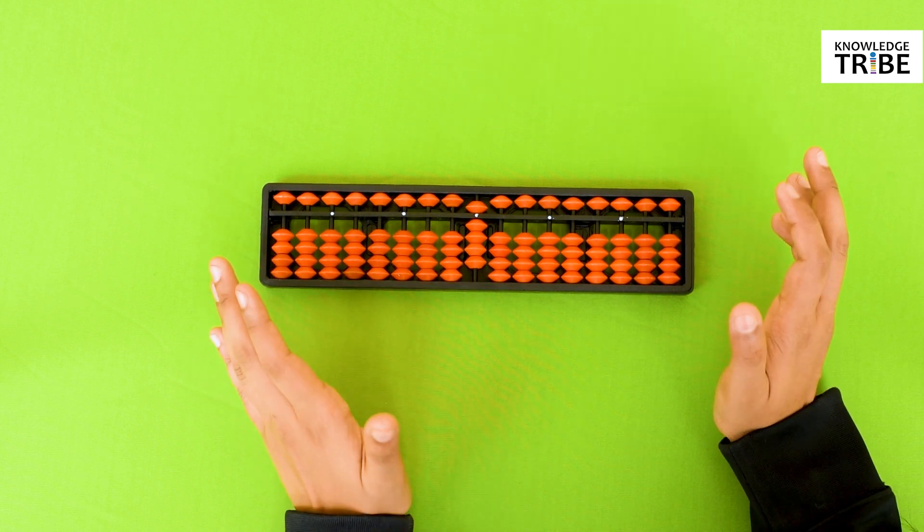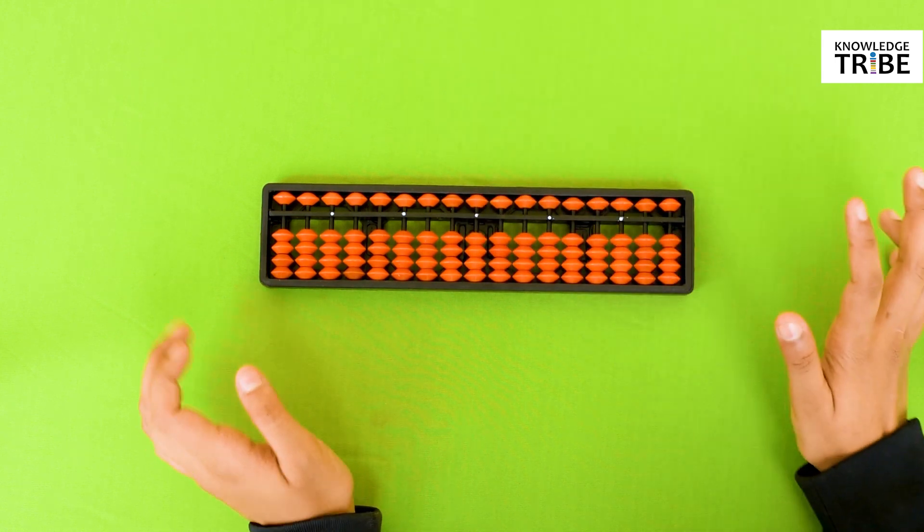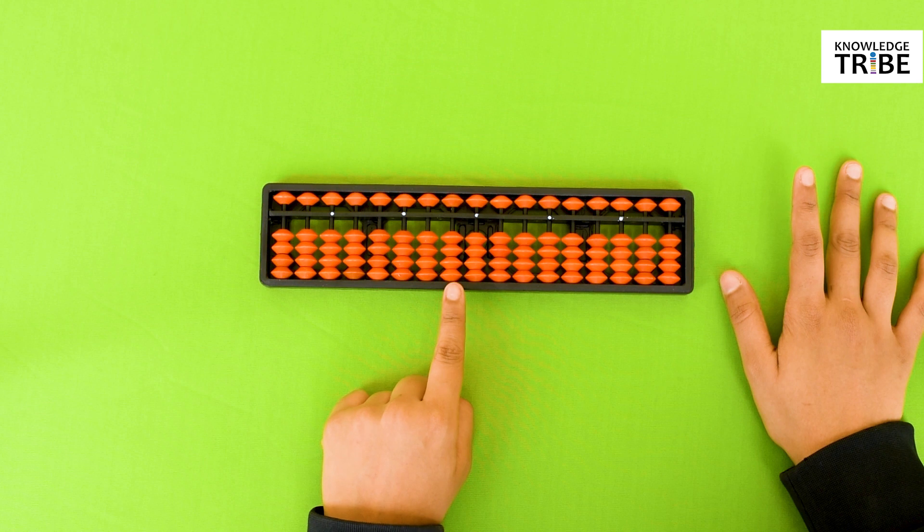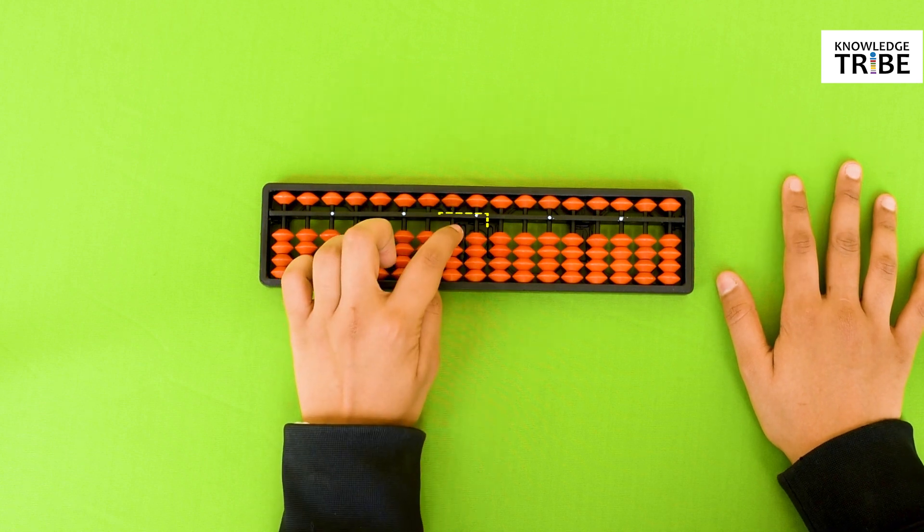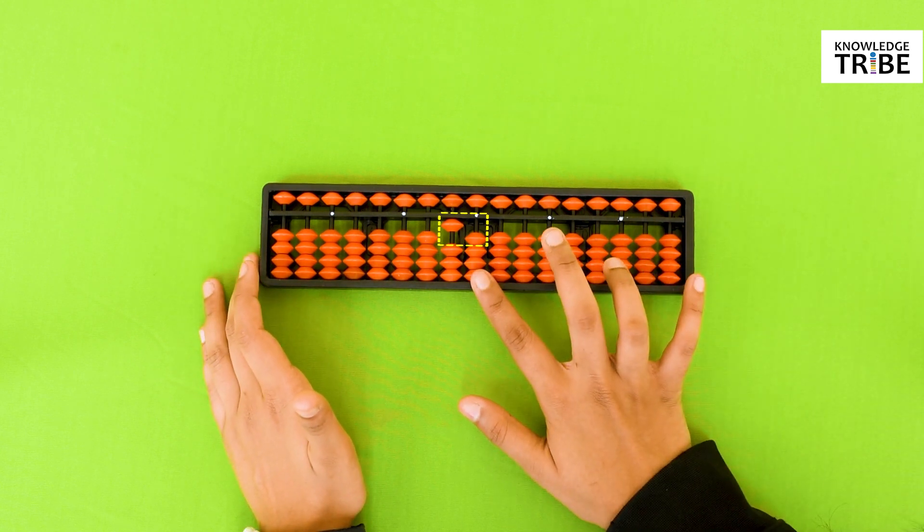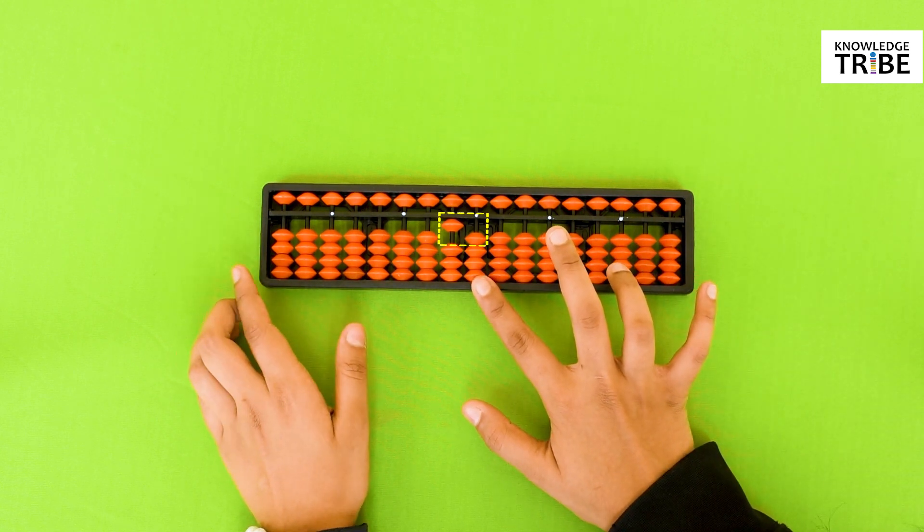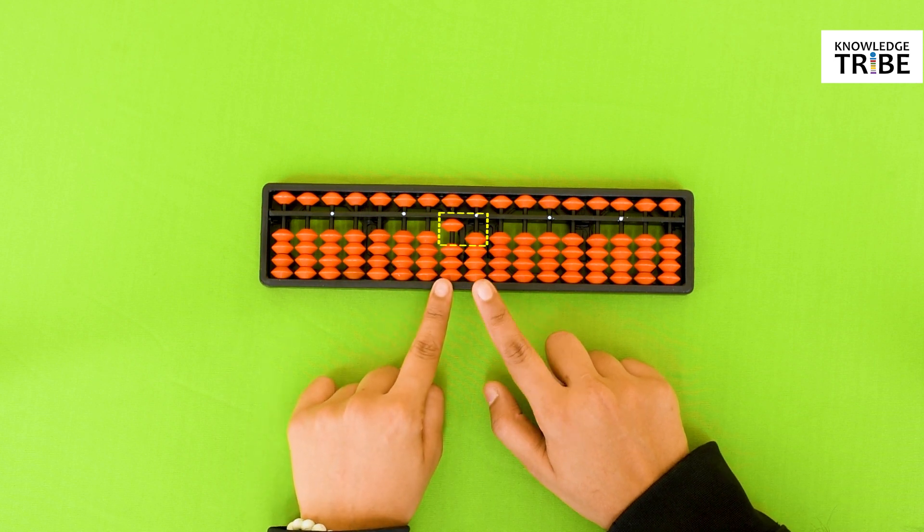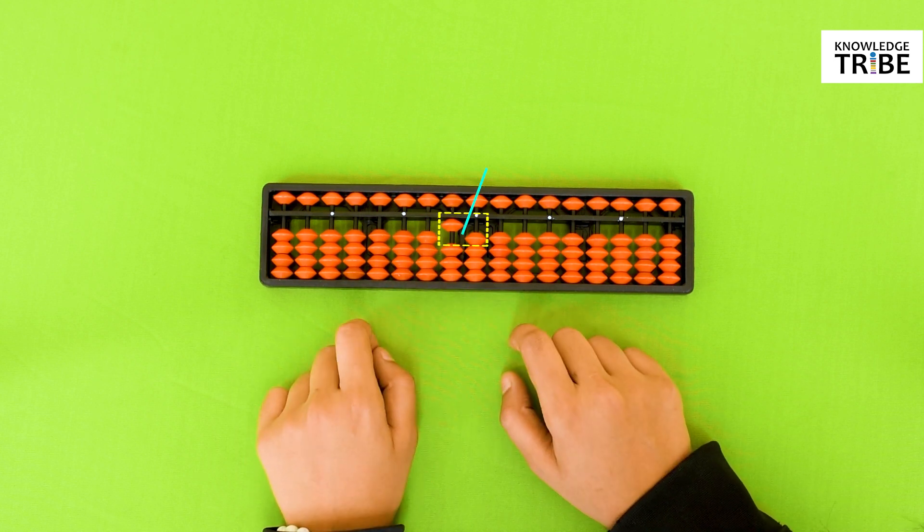So to count 10, put the abacus in default position and move 1 earthly bead from the 10's column towards the center beam. Now the value of the first column is 0 and we put 1 in the second column. So 1 and 0 makes it 10. Simple, right?